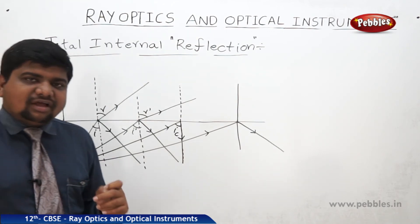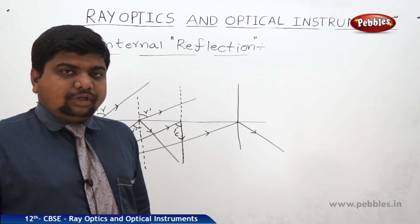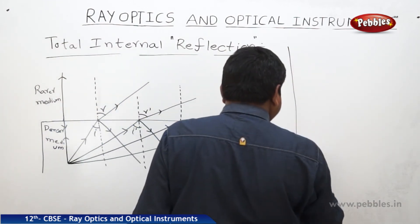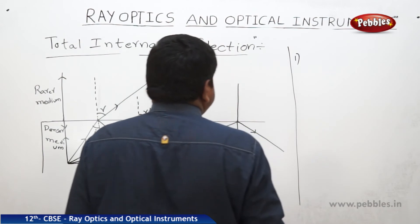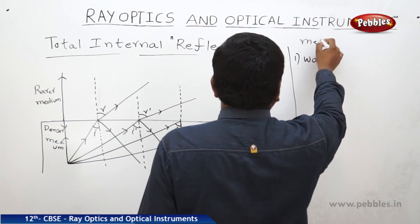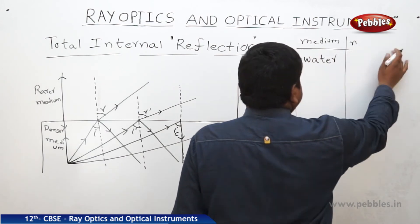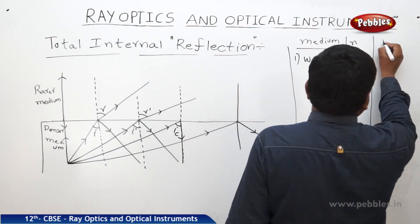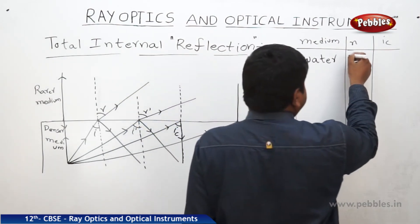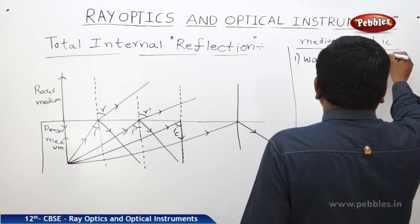Now we will see the different values of critical angle for different media with respect to their refractive indices. We will see the critical angle of some denser media with respect to air. The first example is water. Medium: Water, N value: 1.33, critical angle IC: 48.75 degrees.